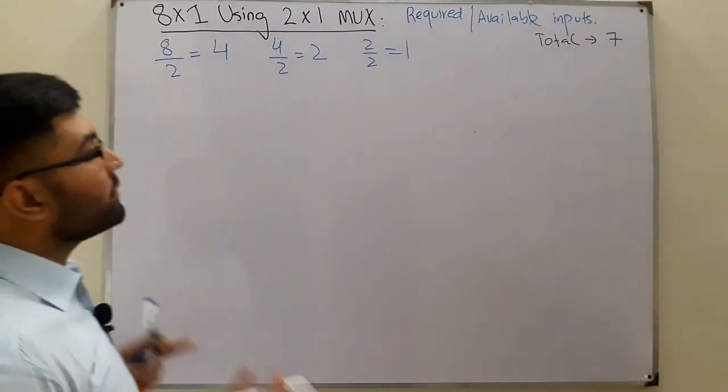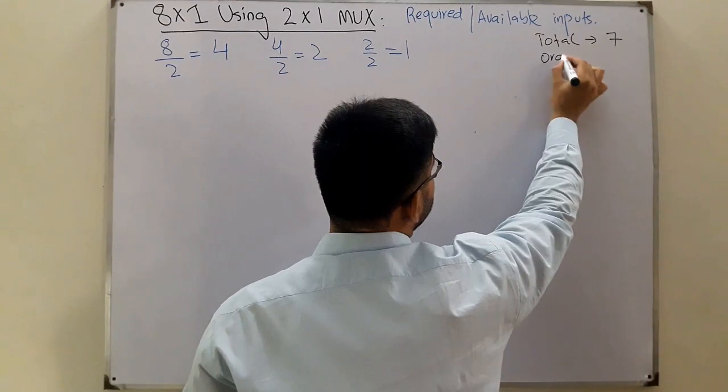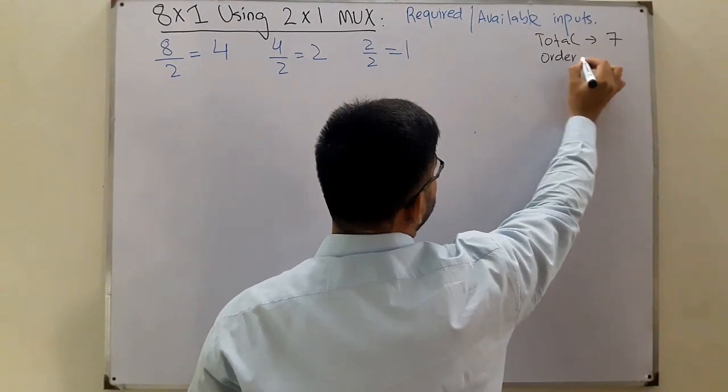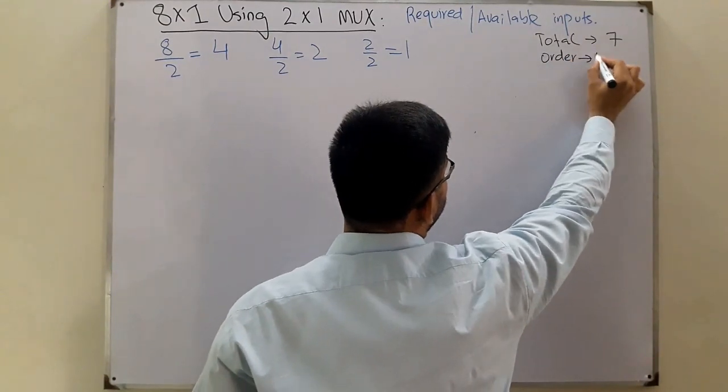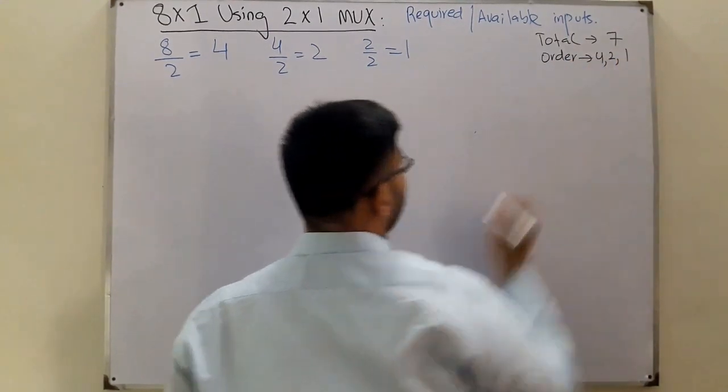And what order do you implement it in? This also shows you the order: you have 4, then 2, then 1.